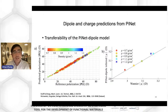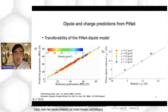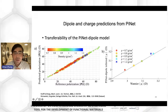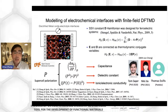To test transferability, we used water structures from a PNAS paper generated at different densities. Without including these structures in our training set, the model predicted Berry phase polarization and average dipole moments quite well, demonstrating good transferability.